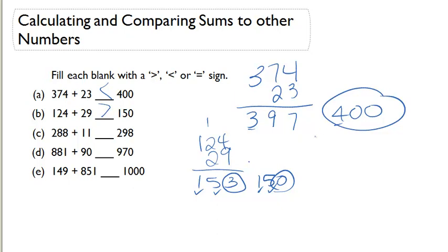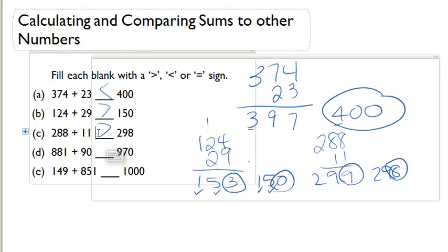Our next one is 288 plus 11. 8 plus 1 is 9. 9. 299 versus 298. We know that here our 9 is greater than our 8. So 299 must be greater than 298.